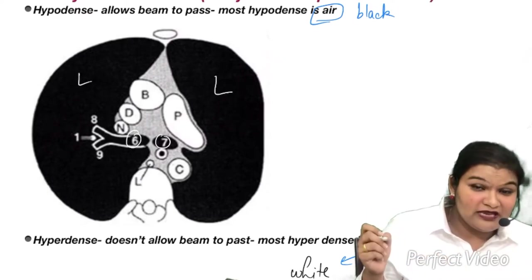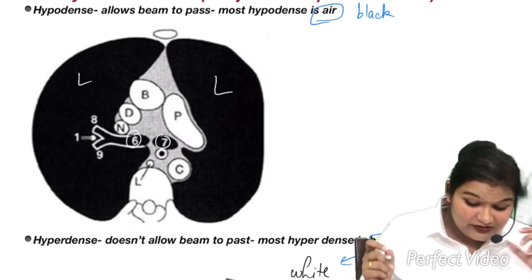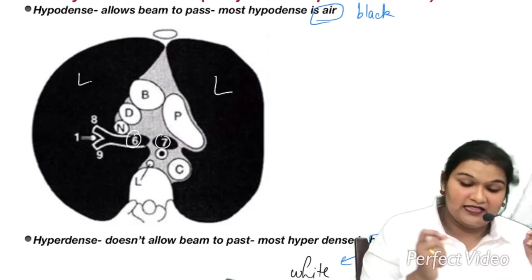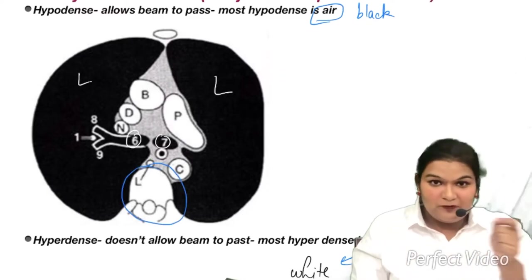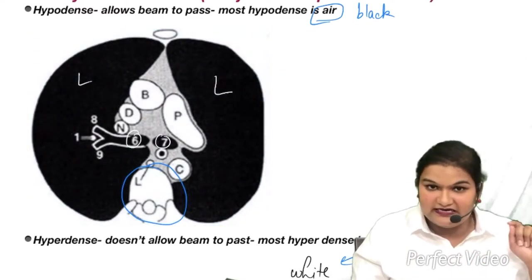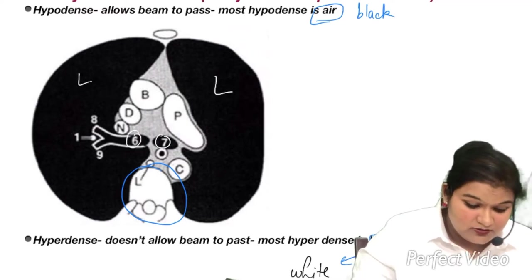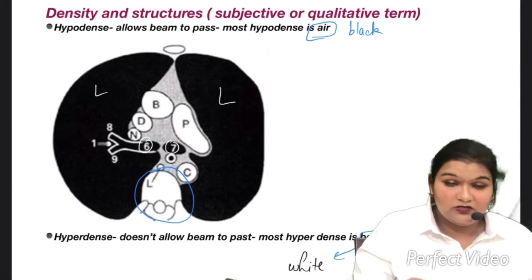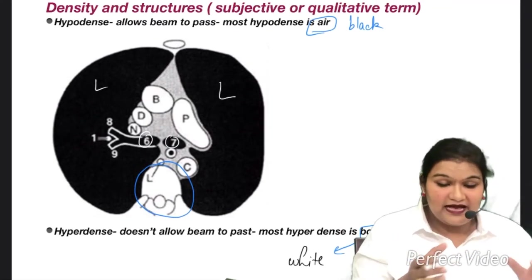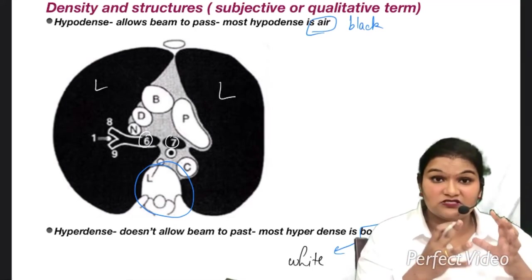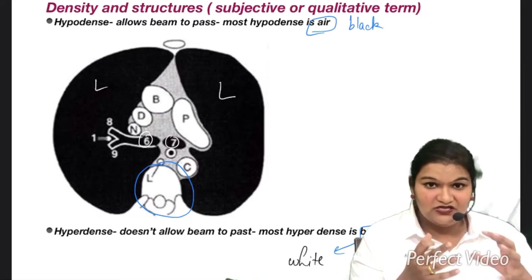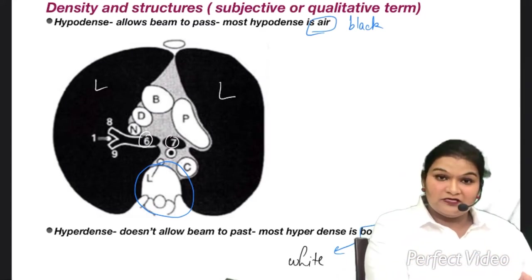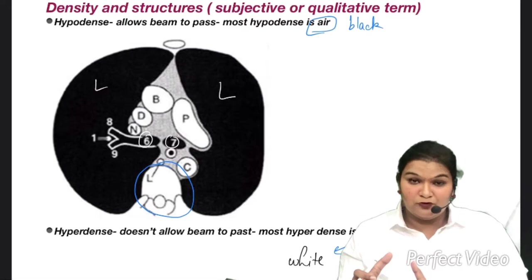And then we have our hyperdense structure that is bone. This vertebra is a hyperdense structure, vertebra is a bone. So here it appears white and it is a hyperdense structure. But the problem with the term hypodense and hyperdense is that it is a subjective or quantitative term. It is not qualitative. How much is the percentage of hypodense? How much is the percentage of hyperdense?